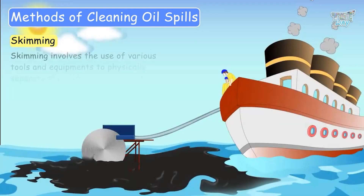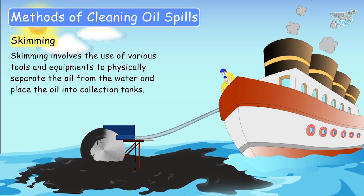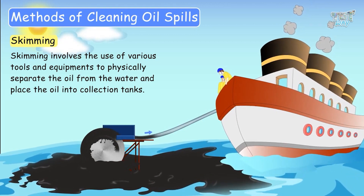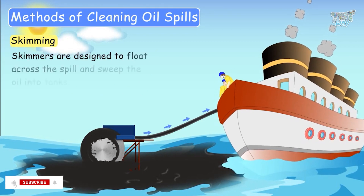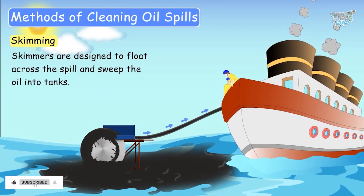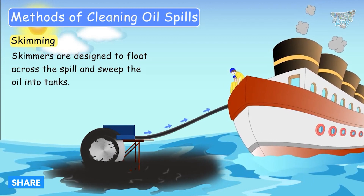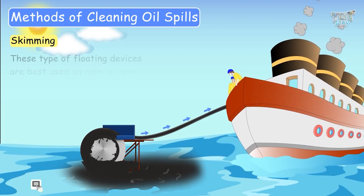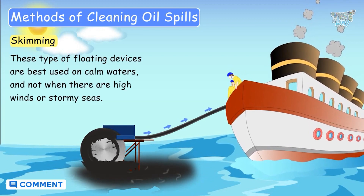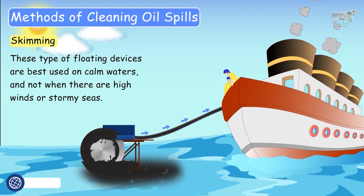Another method is skimming. Skimming involves the use of various tools and equipment to physically separate the oil from the water and place the oil into collection tanks. Skimmers are designed to float across a spill and sweep or scoop the oil into tanks situated either on the coastline or at sea. These floating devices are best used on calm waters and not when there are high winds or stormy seas.